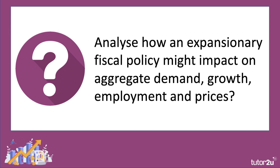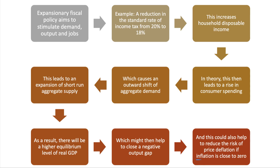How do we analyse how an expansionary fiscal policy might impact on demand, growth, jobs, and prices? Let's take a quick chain of reasoning. An expansion of fiscal policy aims to stimulate demand, output, and jobs. For example, a reduction in the standard rate of income tax — say the UK government cut income tax from 20% to 18%. That tax cut increases household disposable income, which in theory leads to a rise in consumer spending, which prompts an outward shift of aggregate demand, leading to an expansion of short-run aggregate supply. As a result, there'll be a higher equilibrium level of real GDP, which might help to close a negative output gap and could reduce the risk of price deflation, particularly if a country has inflation close to zero. Build analytical chains of reasoning to get those top marks.